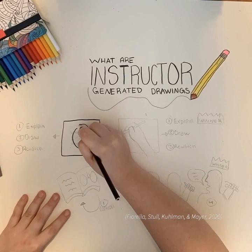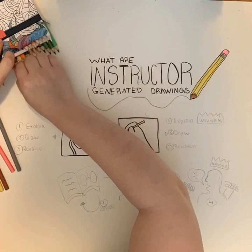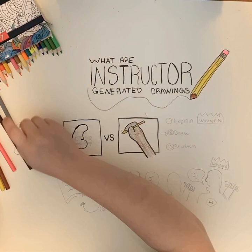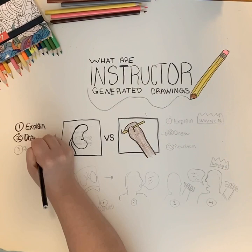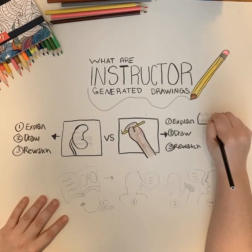They did this by randomly selecting 196 college students and assigning each group to either watch a dynamic video of the human kidney or a static drawing. After each session, the student either wrote a verbal explanation, created drawings, or re-watched the lesson. Then all of the students underwent retention and transfer tests. The results indicated that watching a dynamic video followed by a verbal explanation proved to be most beneficial.